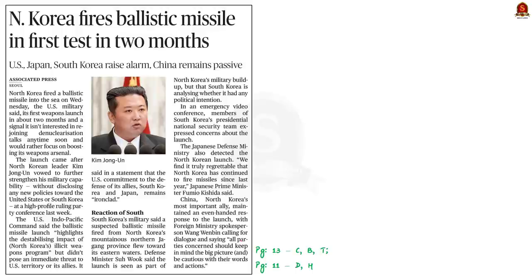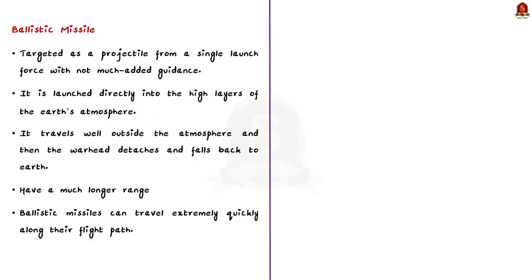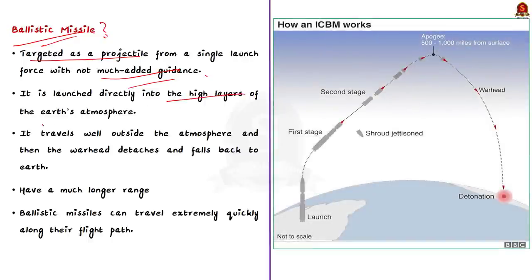Let's move on to the next article. Friends, this is our final article for discussion today. Look at this article. It says that according to US military, North Korea fired a ballistic missile into the sea. So, in this context, we are going to learn about ballistic missile and cruise missiles, its differences and we will also see some examples. First of all, what is a ballistic missile? See, the ballistic missile is targeted as a projectile from a single launch force with not much added guidance. It is launched directly into the high layers of earth atmosphere and it travels well outside the atmosphere and then the warhead detaches and falls back to earth. It follows the path of a ball thrown upwards which falls down. Since it depends on gravity to reach its target, it is called as ballistic missile.